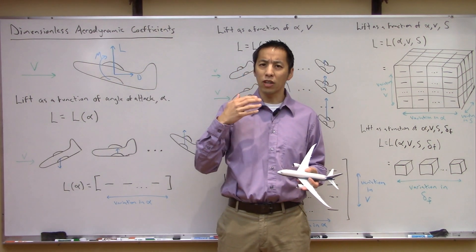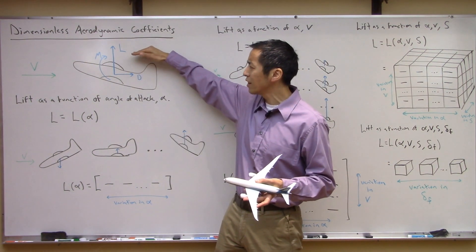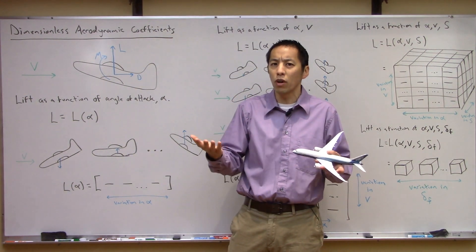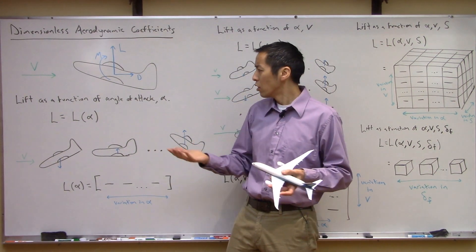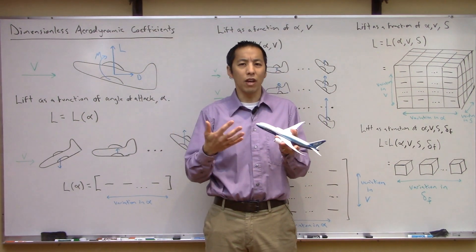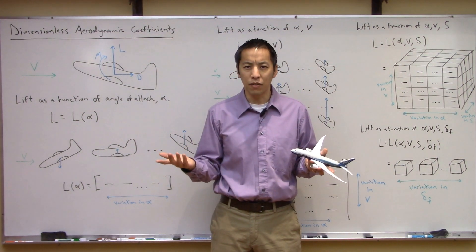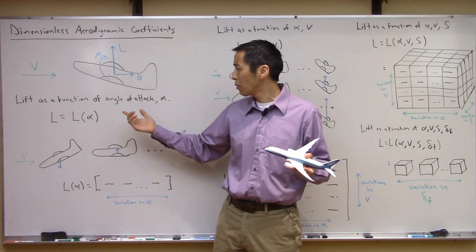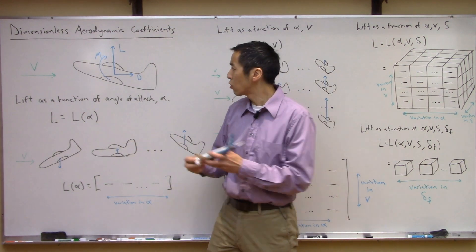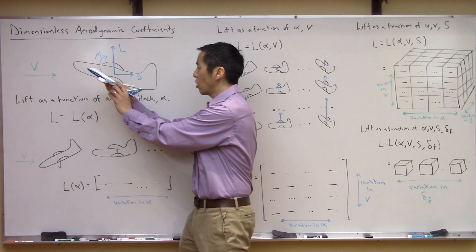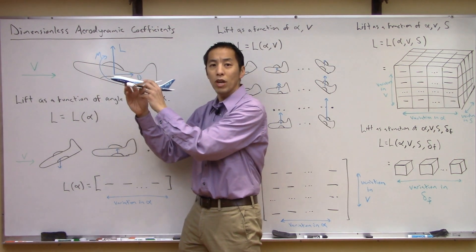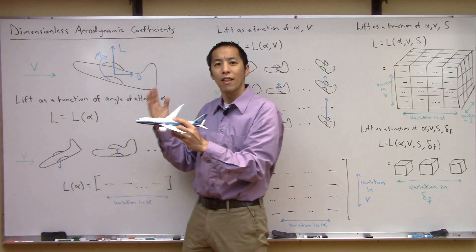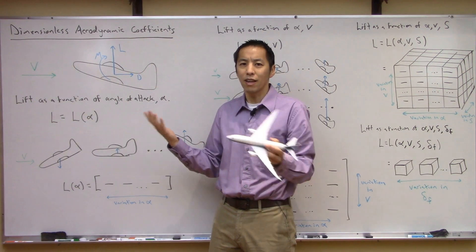To start a thought experiment, let's focus on just lift — one component of the force vector. The lift of the aircraft is affected by a lot of different things. Primarily, one thing is just looking at this picture: it probably matters the angle of attack. As this aircraft has a different angle with respect to the incoming wind, the amount of lift — the component of force perpendicular to this wind vector — obviously changes. That's not hard to imagine.